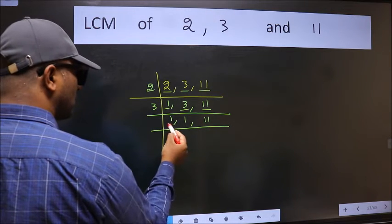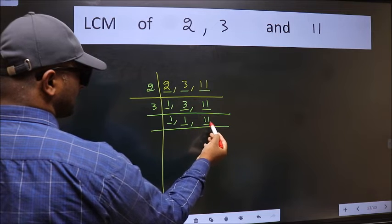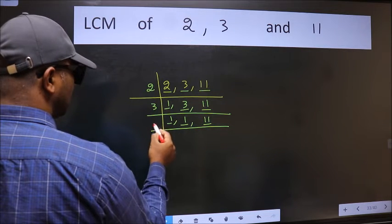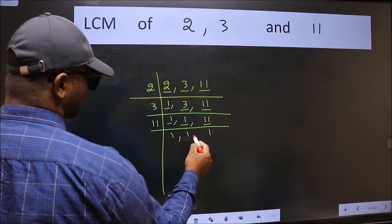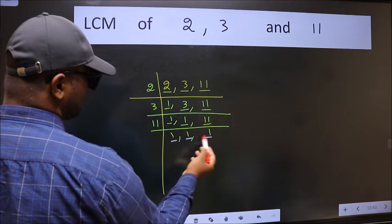Now we got 1 here and here. So focus on the next number 11. 11 is a prime number so 11 divided by 11 is 1. So we got 1 in all the 3 places.